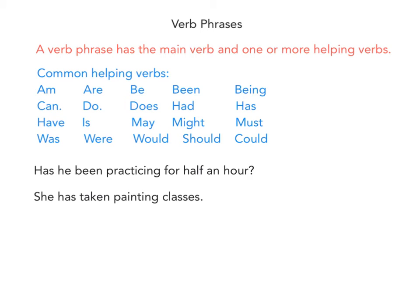Continuing the list of helping verbs: was, were, would, should, could. If you see one of these words, there is going to be a verb next to it, and that will make up a verb phrase.